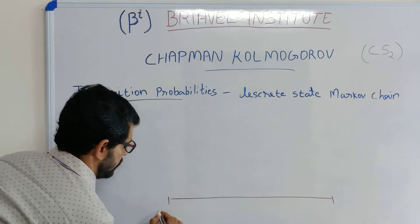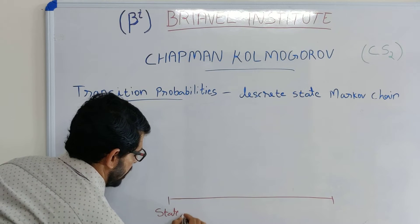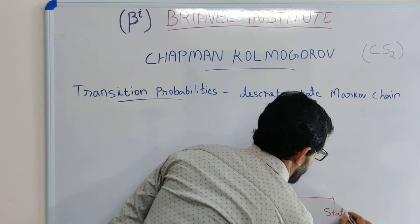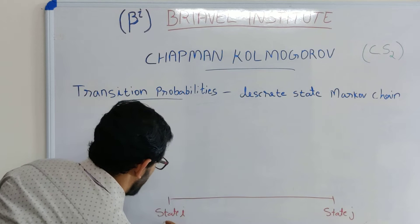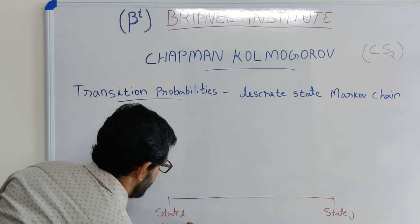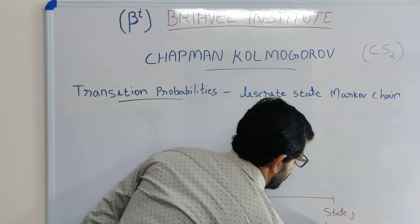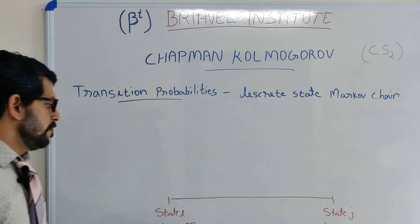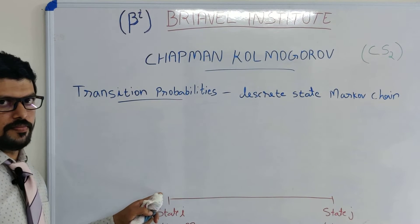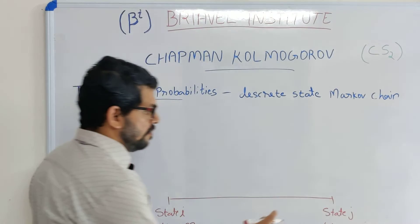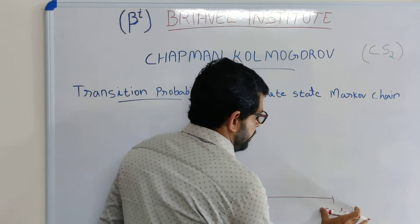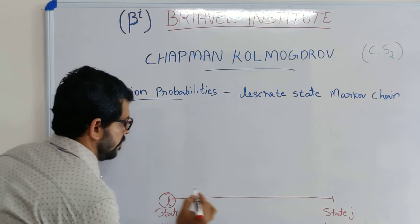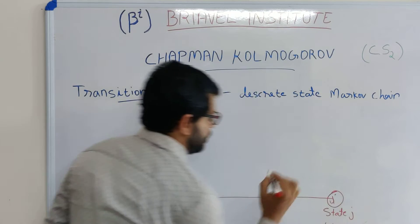We consider two states: state I and state J. At time m we are in state I, and at time n we have reached state J. So initially we are in the Ith state, and we reach the Jth state.